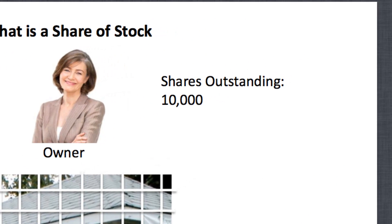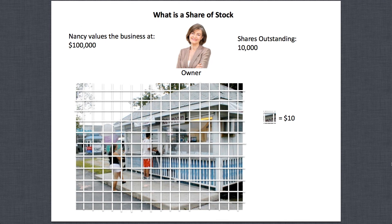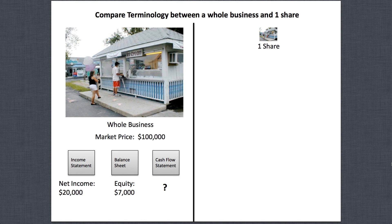The term 'shares outstanding' is the correct terminology when buying stocks. It tells you how many pieces the company has been divided into. You start with a whole business and look at the shares outstanding to see how many pieces it's been split into. A company like Apple has close to a billion shares outstanding, so if you own one share, you own one billionth of the company.